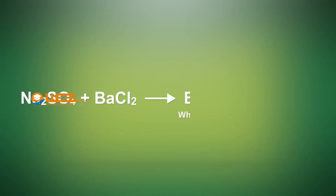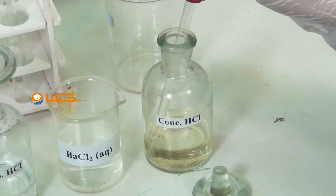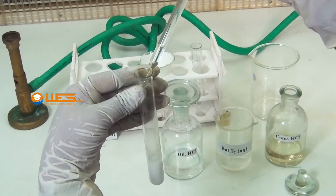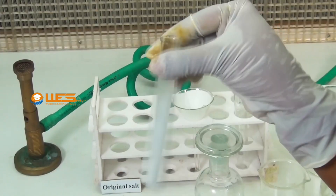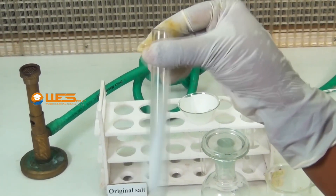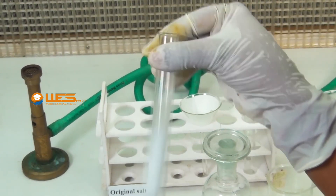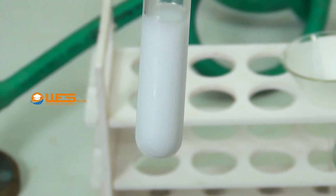Sulphate reacts with barium chloride to form a white precipitate of barium sulphate. Using a dropper, add a small amount of concentrated hydrochloric acid to the white precipitate. Shake the contents of the test tube well. The white precipitate is insoluble in concentrated hydrochloric acid, indicating the presence of sulphate.